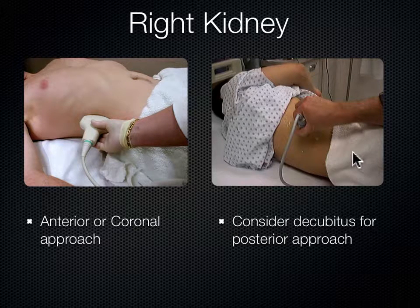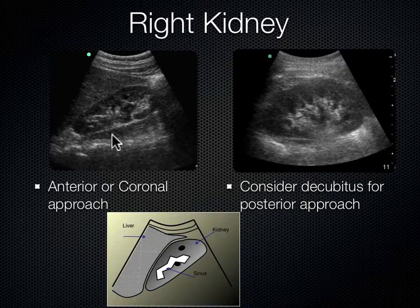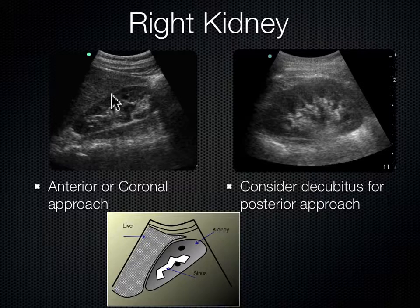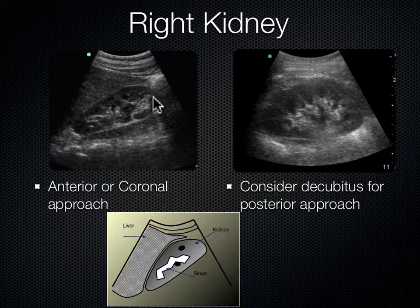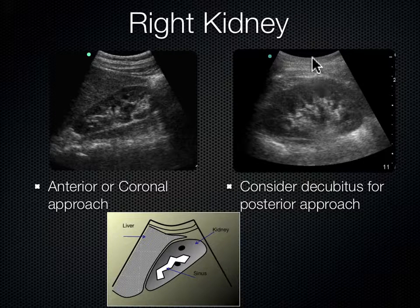If you can't get lucky that way, you can roll the patient decubitus—left lateral decubitus means on their side. You look between the ribs from a posterior approach and sometimes see the kidney a little better. From the anterior or coronal approach we're using the liver as our window. Going more posterior, we see another structure behind the kidney—that's the psoas muscle, which lies right on top of the spine. So the order is: spine, psoas, kidney, liver. Rolling the patient decubitus lets us see the kidney stretching out in long axis with no liver in the window.